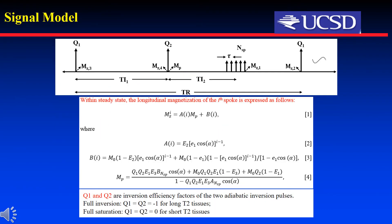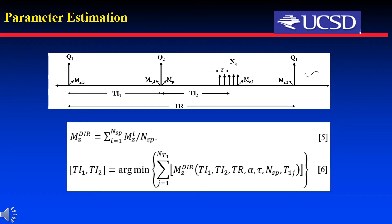The signal expressions of both short and long T2 components can be derived. Q1 and Q2 are inversion efficiency factors of the two adiabatic inversion pulses. For long T2 tissues, Q1 and Q2 equal minus 1. For short T2 tissues, Q1 and Q2 are 0. The signal equation for each spoke is shown in Equation 1. The final signal intensity for multiple spoke acquisitions is the median averaging of the multi-spoke acquisitions. A general framework to minimize signals from long T2 tissues for the DIR prepared sequence is expressed in Equation 6. With long TR, excitation flip angles, spoke duration, spoke number, and the T1s of long T2 tissues, the optimal TI1 and TI2 can be determined using this framework.